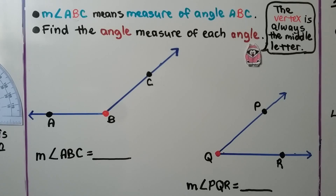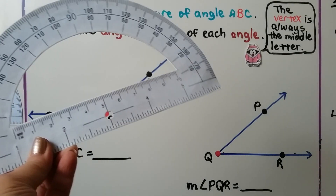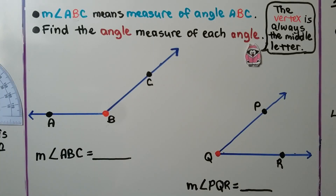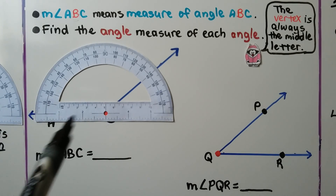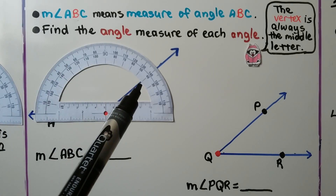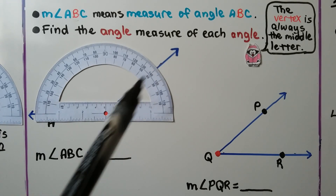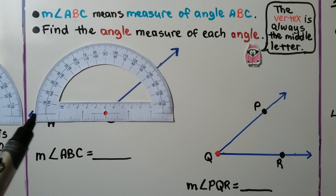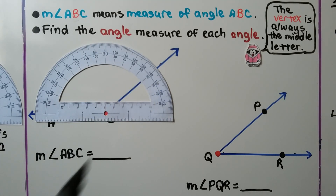We need to find the measure of angle ABC. We use our protractor and line up vertex B with the center point. Because this angle is open on the left side, we start with zero on the left side and use the outside scale. We can see it's greater than a right angle, so it can't be 40 degrees — it must be greater than 90. The ray goes through 140 degrees, so the measure of angle ABC is 140 degrees.